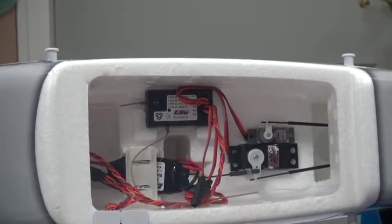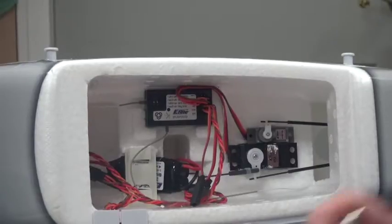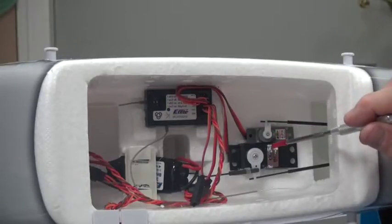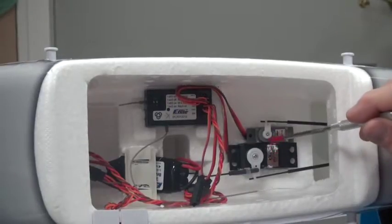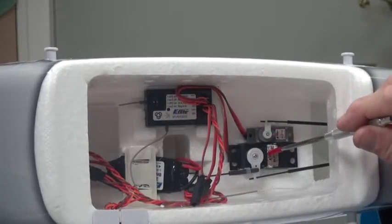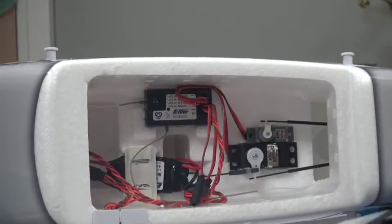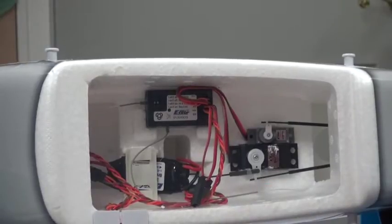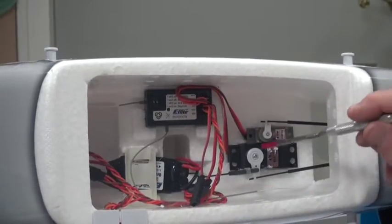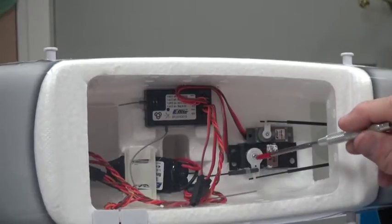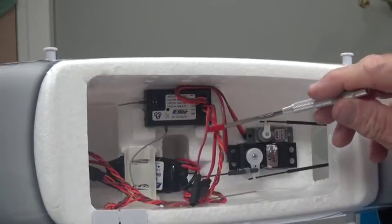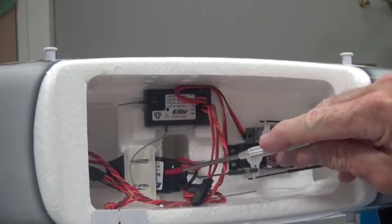The servos, we will make sure they're centered before we put the clevises onto the tail, to the rudder and elevator, and we'll also make sure that this is centered before we install the nose wheel. The next video I'm going to talk in detail about the ESC, what to know about it, and the following video I'll talk about the receiver.